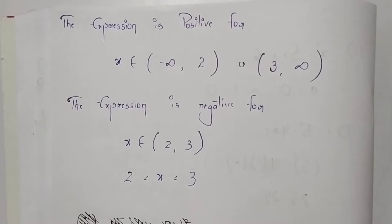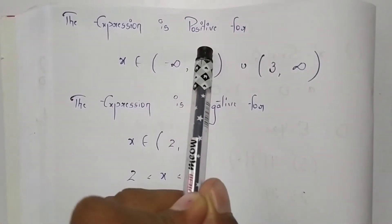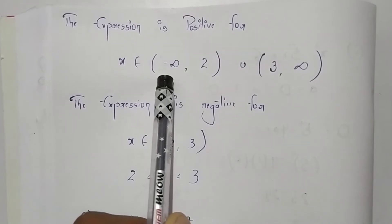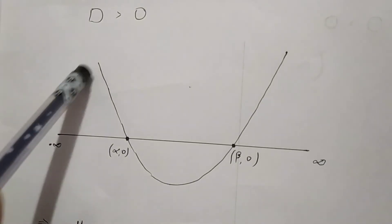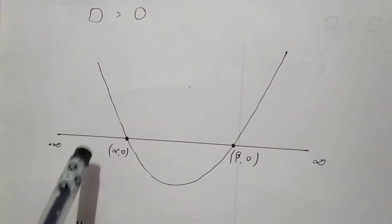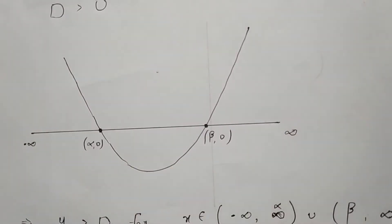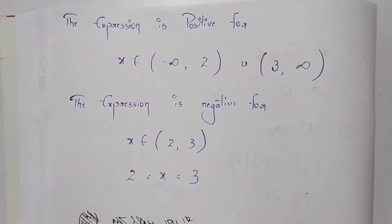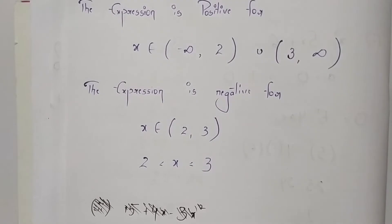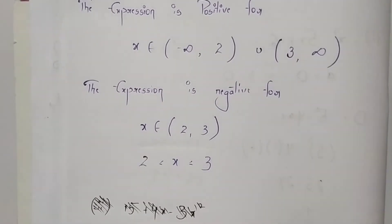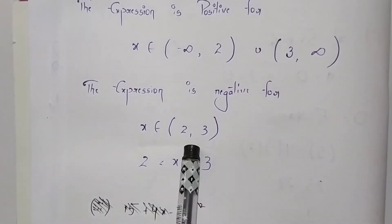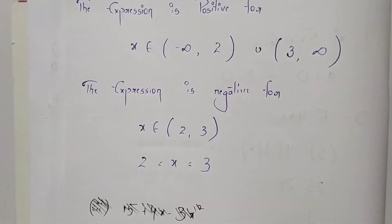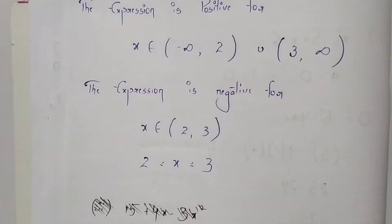The given expression will be positive if x belongs to (-∞, 2) ∪ (3, ∞). The graph is positive in those outer regions. The expression will be negative if x belongs to (2, 3).